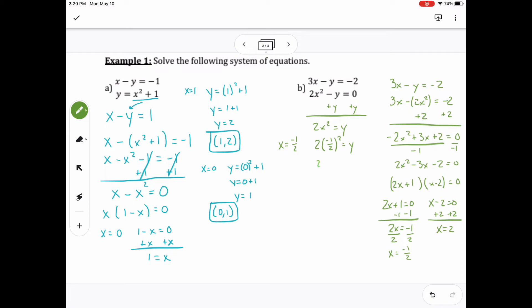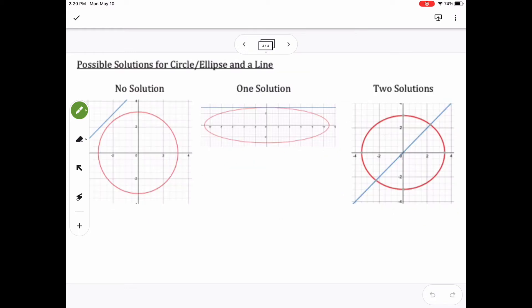So plugging in negative 1 half gets me 2 times 1 fourth, which ends up being 1 half anyway. So my ordered pair would be negative 1 half comma 1 half. And then plugging in 2, 2 squared is 4 times 2, I actually get 8. So then 2 comma 8 is my other possibility.